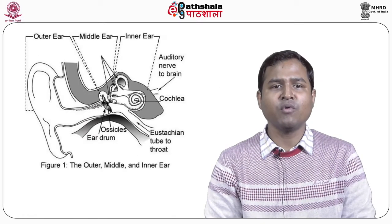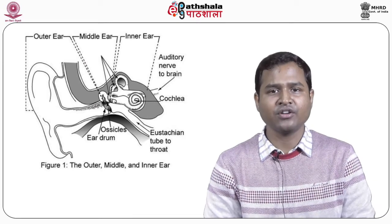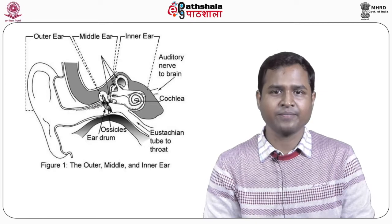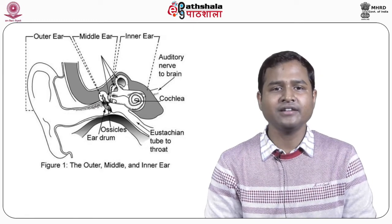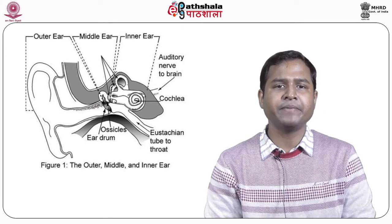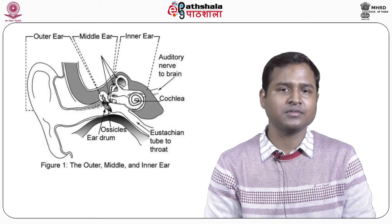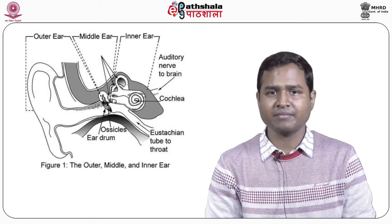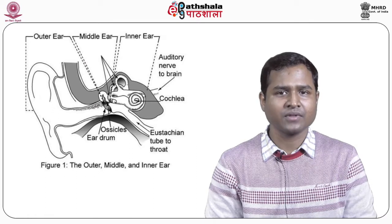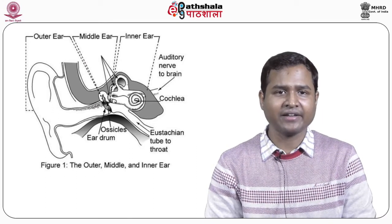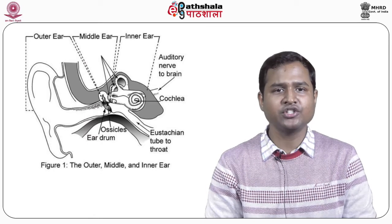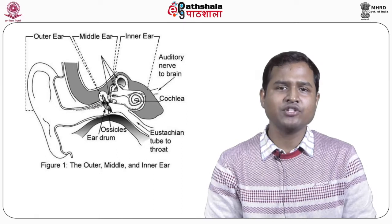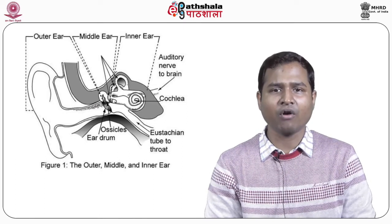Hearing is the most important sensory organ for communication with the external environment. The auditory organ, the ear, anatomically consists of three main parts: one, the external ear; two, the middle ear; and three, the inner ear. The external ear contains the pinna and external auditory canal. The middle ear consists of the tympanic membrane and ear ossicles. The inner ear consists of the cochlea and vestibular apparatus. Damage to the outer and middle ear leads to conductive hearing loss, and damage to the inner ear produces sensorineural hearing loss.